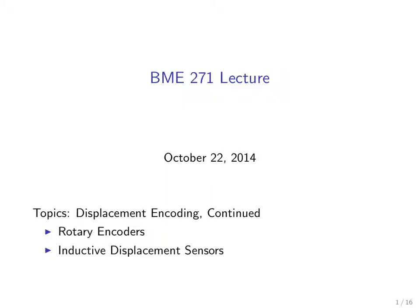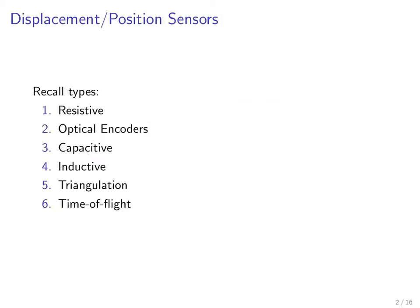In this BME271 lecture, we will continue our discussion of displacement encoding sensors by talking about rotary encoders and inductive displacement sensors. Recall the different types of displacement and position sensors we've been talking about. In the previous lecture, we talked about resistive encoders. Today, we're going to talk about optical encoders.